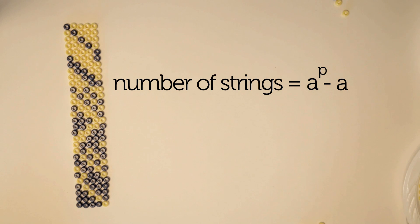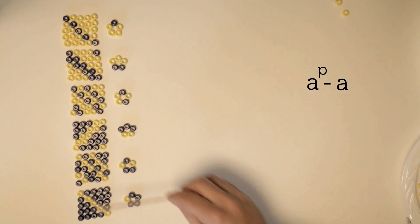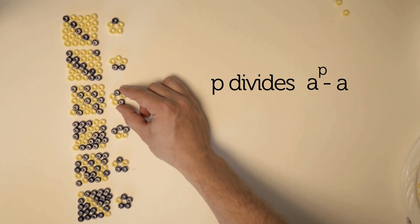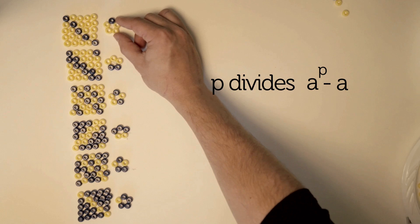Given some prime number p and some other integer a, which is just less than p, we know now that p divides a to the power of p minus a. We write this as a to the power of p equals a mod p, and that's the way you'll normally see it.